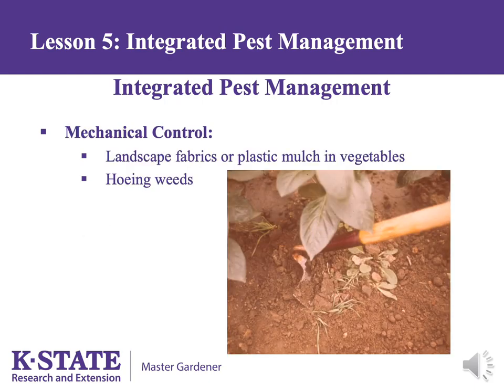Mechanical control includes hoeing, pulling weeds, or handpicking insects such as tomato hornworms. Landscape fabrics have been recommended under mulch to prevent weeds. However, over time, weed seeds will germinate under the mulch but on top of the fabric, and roots penetrate the fabric so that when the weed is removed, the fabric is pulled up. We now recommend using organic mulch without the fabric.